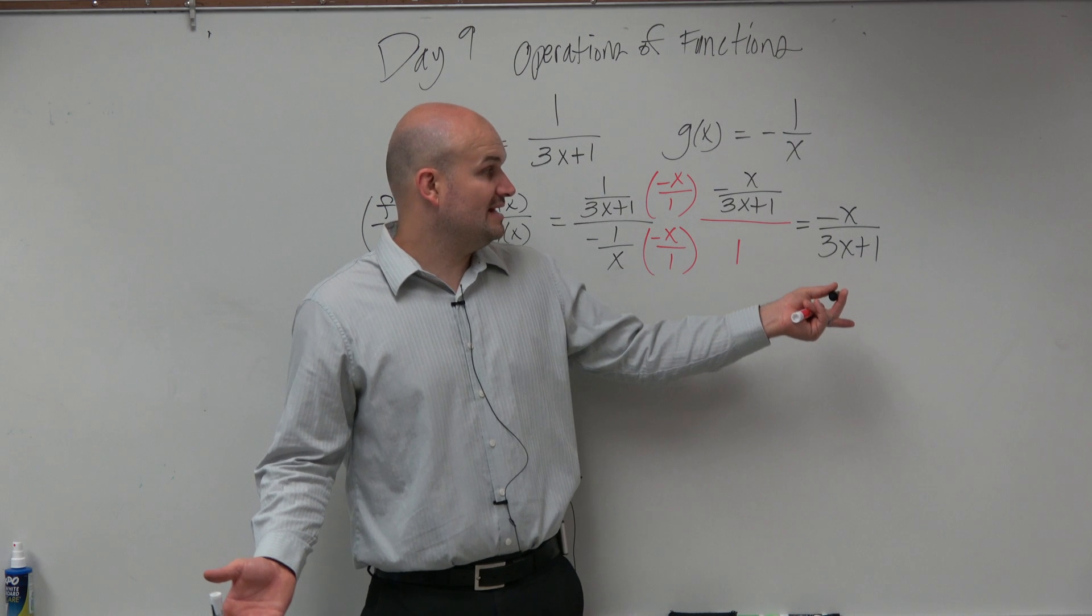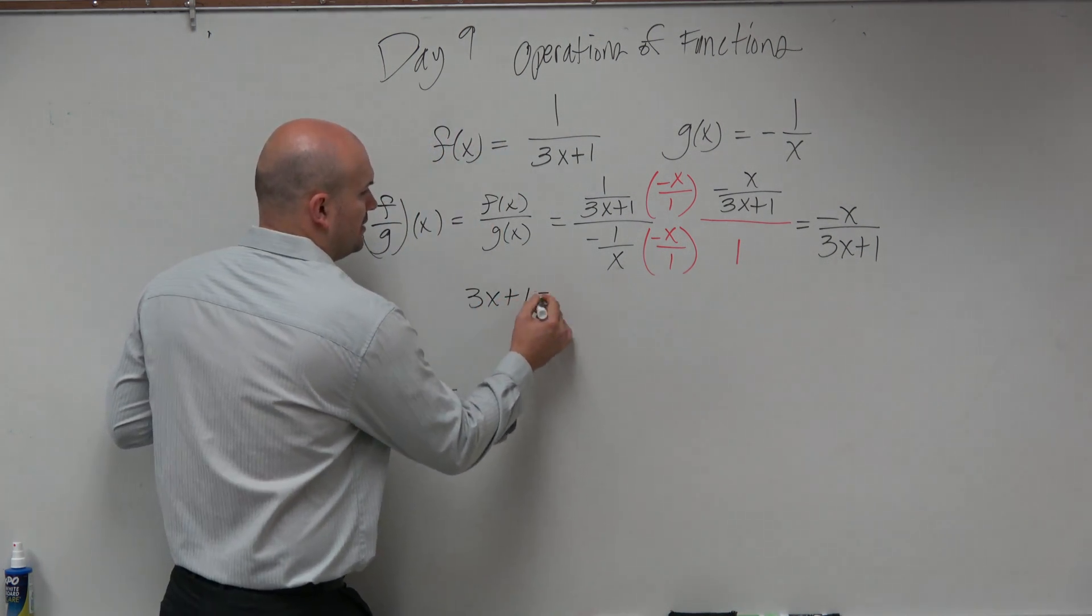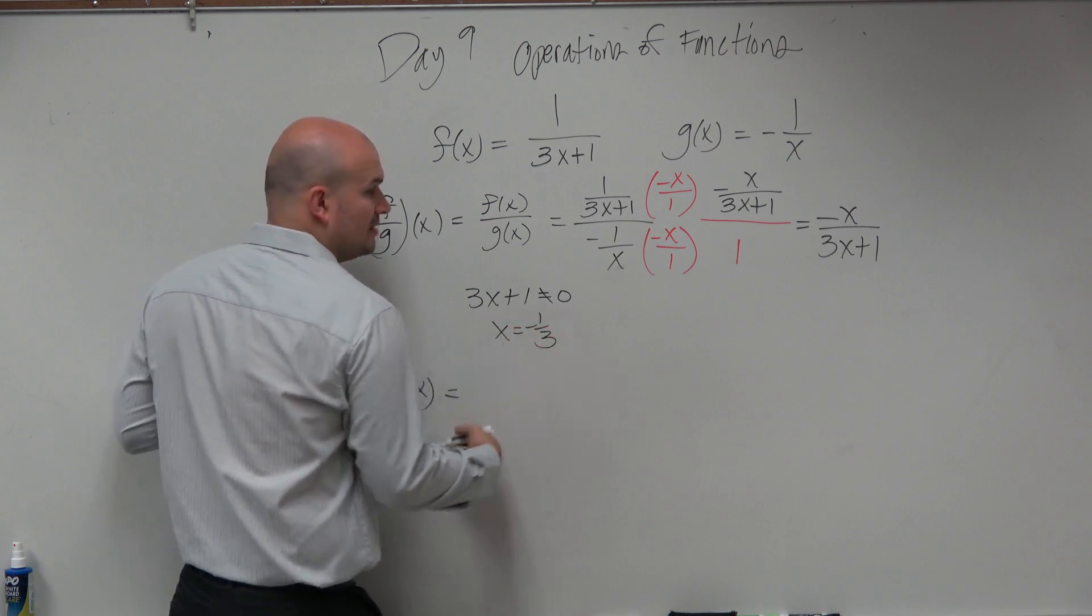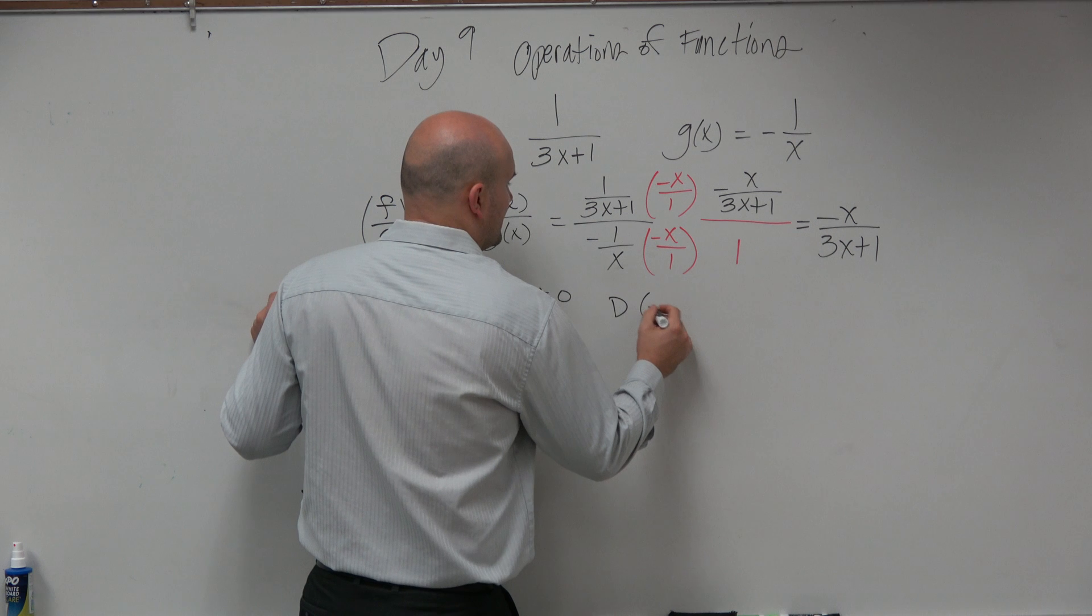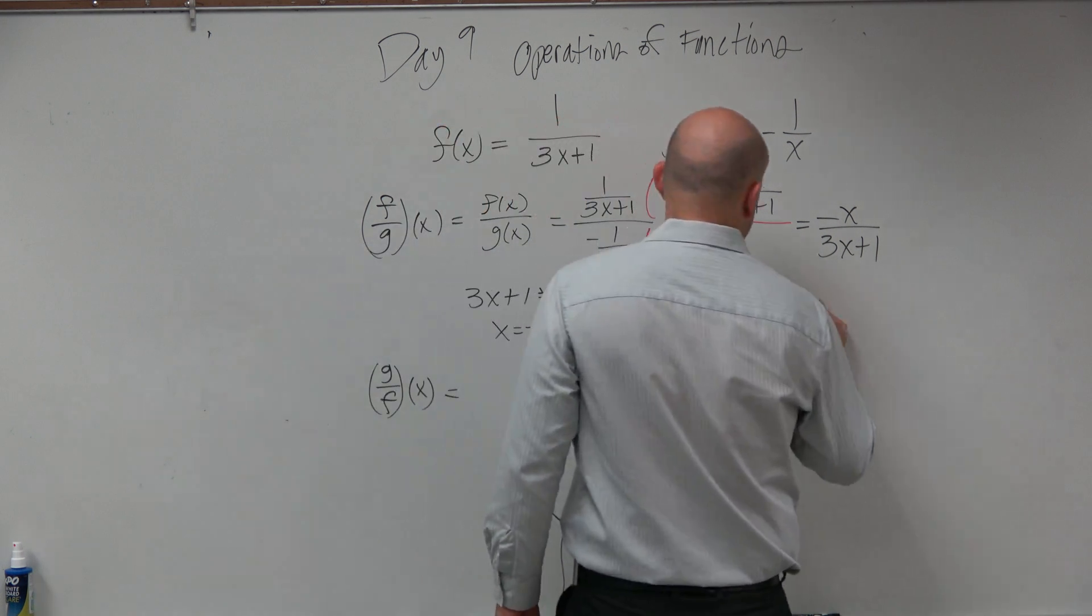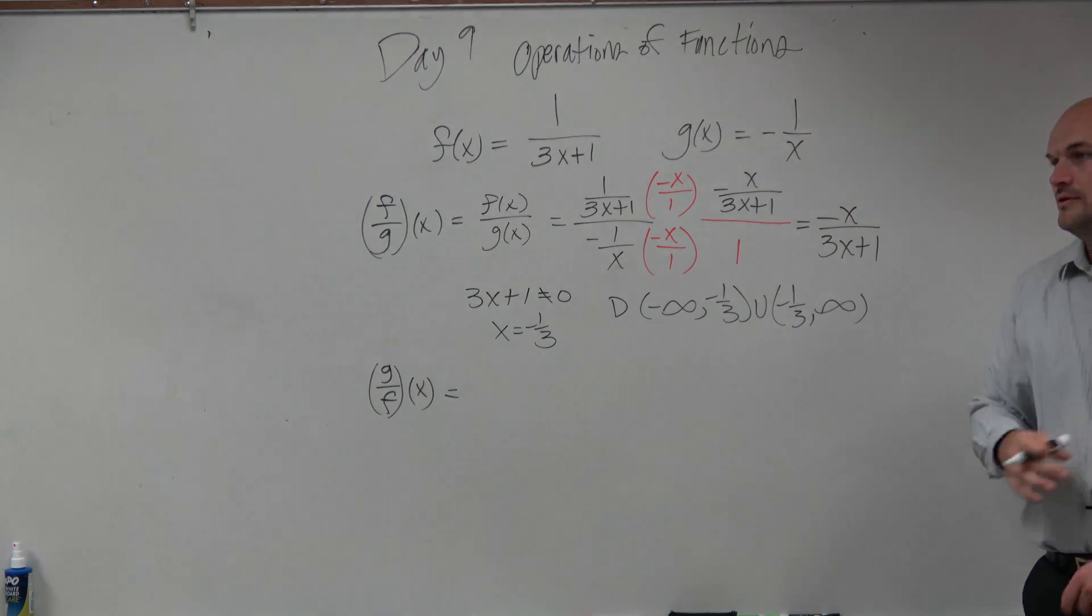So now let's find the domain. Well, the domain is going to be all the numbers except where 3x plus 1 cannot equal 0, which we already said was x is equal to negative 1 third. So my domain is from negative infinity to negative 1 third, union negative 1 third to infinity.